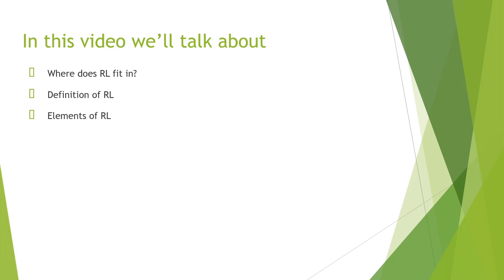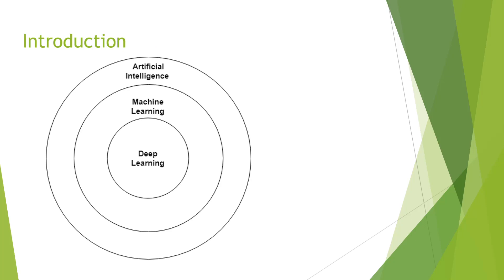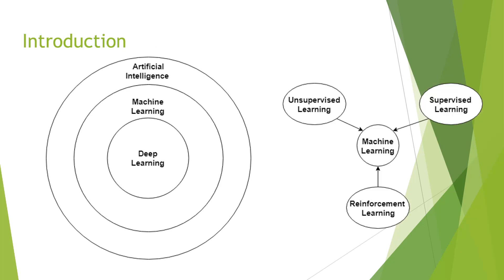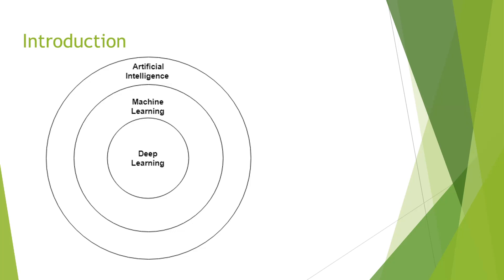So where does RL fit in artificial intelligence? AI is this broad discipline of computer science which is concerned with finding techniques to make machines that have human level intelligence. Machine learning is a part of artificial intelligence which allows computer programs to automatically improve based on data, and further into it lies deep learning.